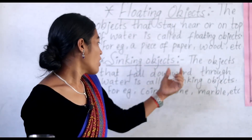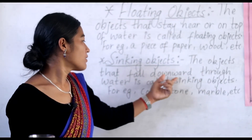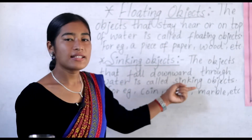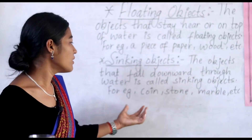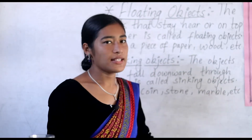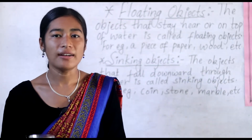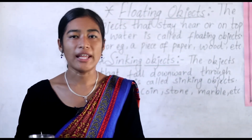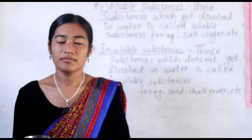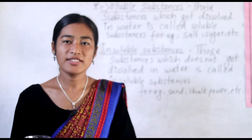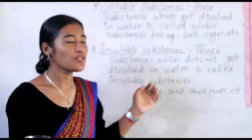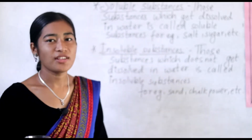So the stone sinks into the water — a stone is a sinking object. The object that falls downward through the water is called a sinking object. For example, a coin, stone, marble, etc. Sinking objects are heavier than floating objects. Now we will go to the next topic: soluble substances and insoluble substances.